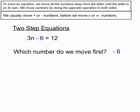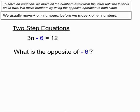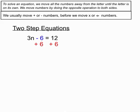We move numbers by doing the opposite operation to both sides. What's the opposite of a minus 6? Opposite of a minus 6 is a plus 6. So we'll do that plus 6 both sides. On that left-hand side, the minus 6 and the plus 6 will cancel each other out, leaving us with just the 3n. On the right-hand side, 12 plus 6 equals 18.